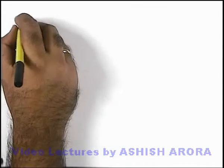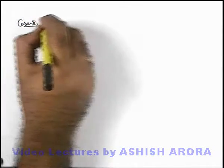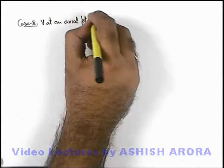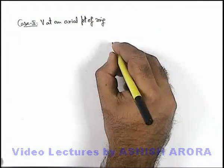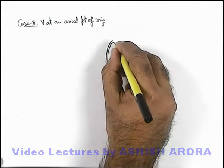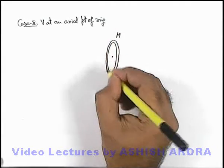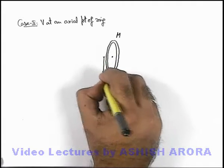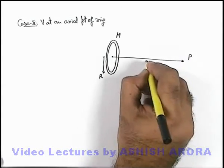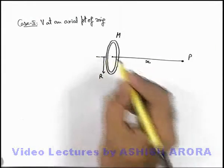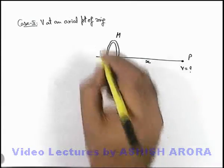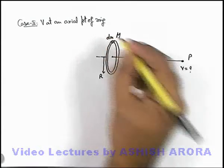Now for Case 2, we find out V at an axial point of the ring. We have the same ring of radius r as discussed in Case 1. This is the axis of the ring, and there is a point P located at a distance x from the centre of the ring. We wish to find out the potential at this point P.